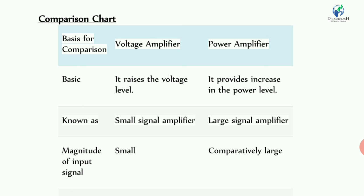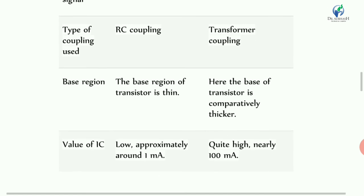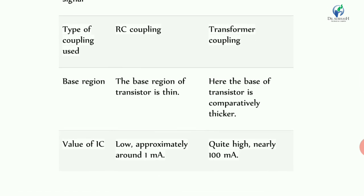The type of coupling used is another key comparison point. The voltage amplifier uses RC coupling, while the power amplifier uses transformer coupling. Transformer coupling is used to interface the power amplifier with the output load.